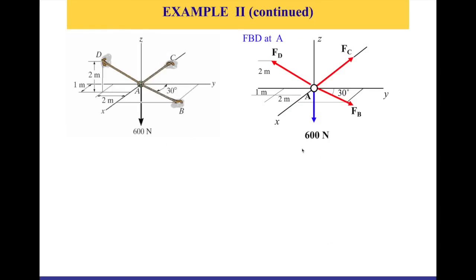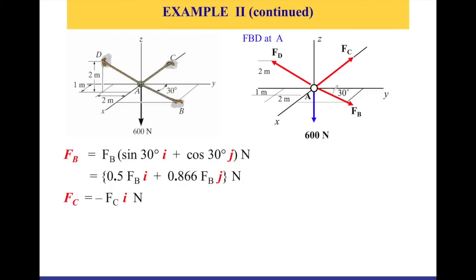Step one — free body diagram. This is our free body diagram: point A, 600 going down, that's your FB, that's FC, and FD. Now let's see how I'm going to write each one in their Cartesian coordinate system. So for FB, I have an angle of 30. I don't have anything on the Z-axis because it's on the plane of XY. The angle is off the Y-axis, so this is the cosine — FB cosine 30. On the X-axis it's FB sine 30. You multiply it by FB because that's the magnitude, and that's your FB in Cartesian form.